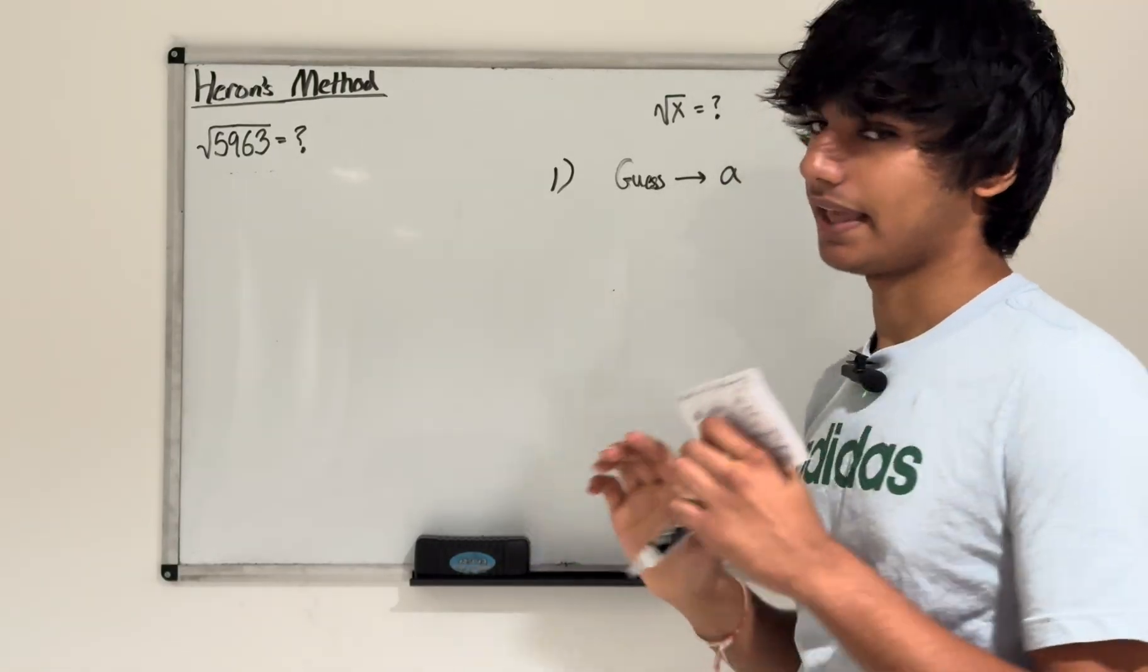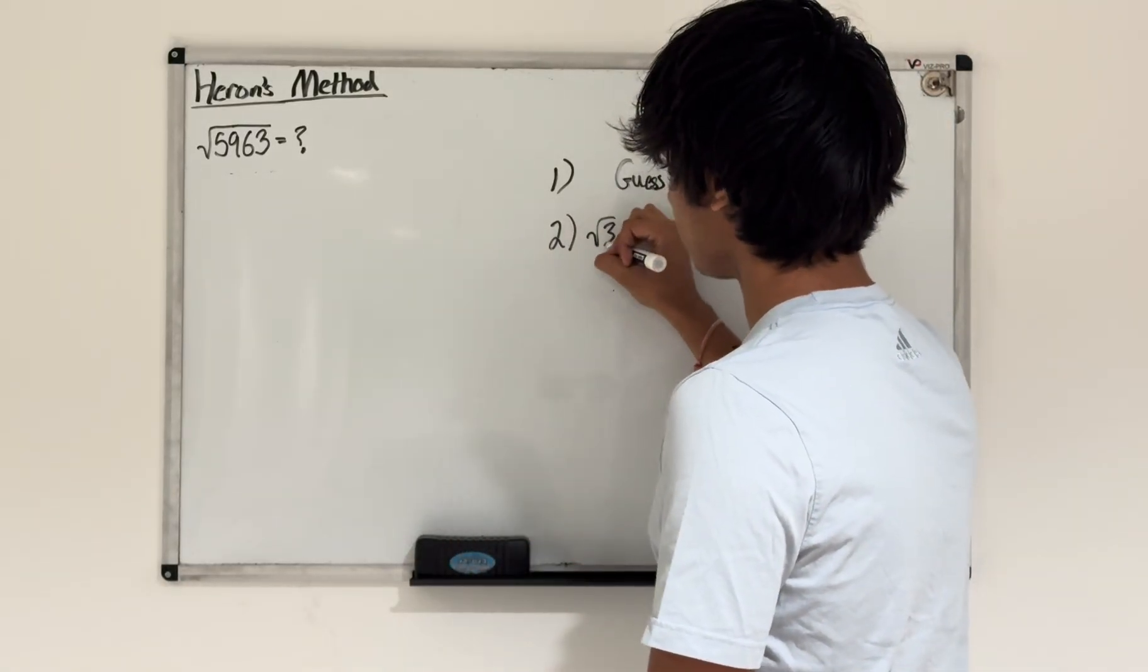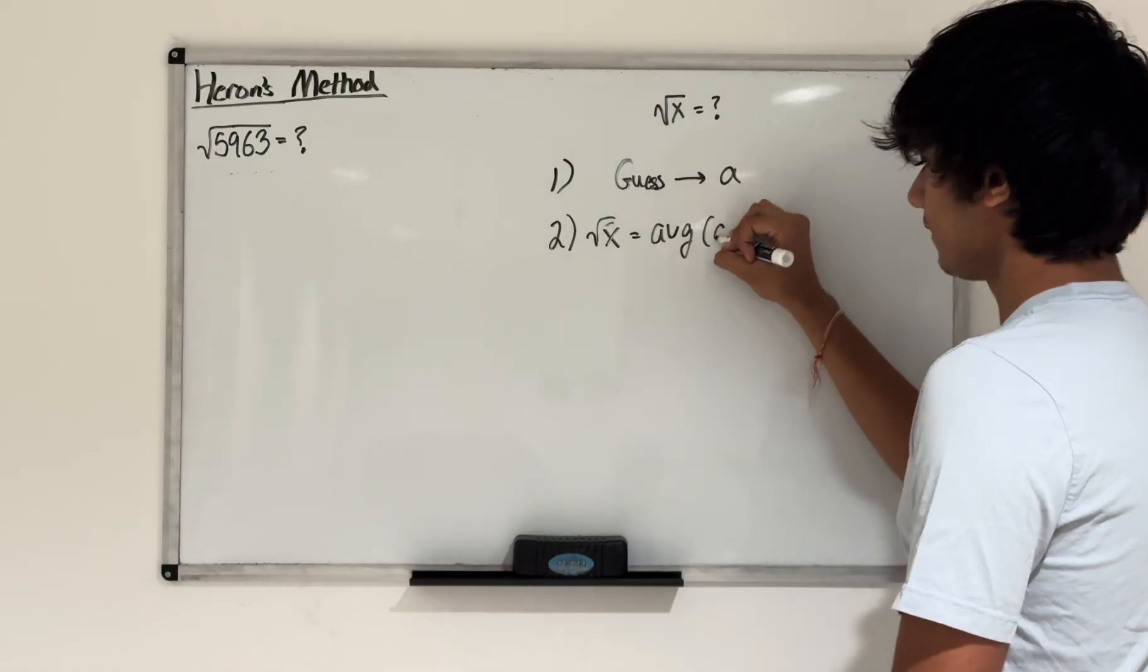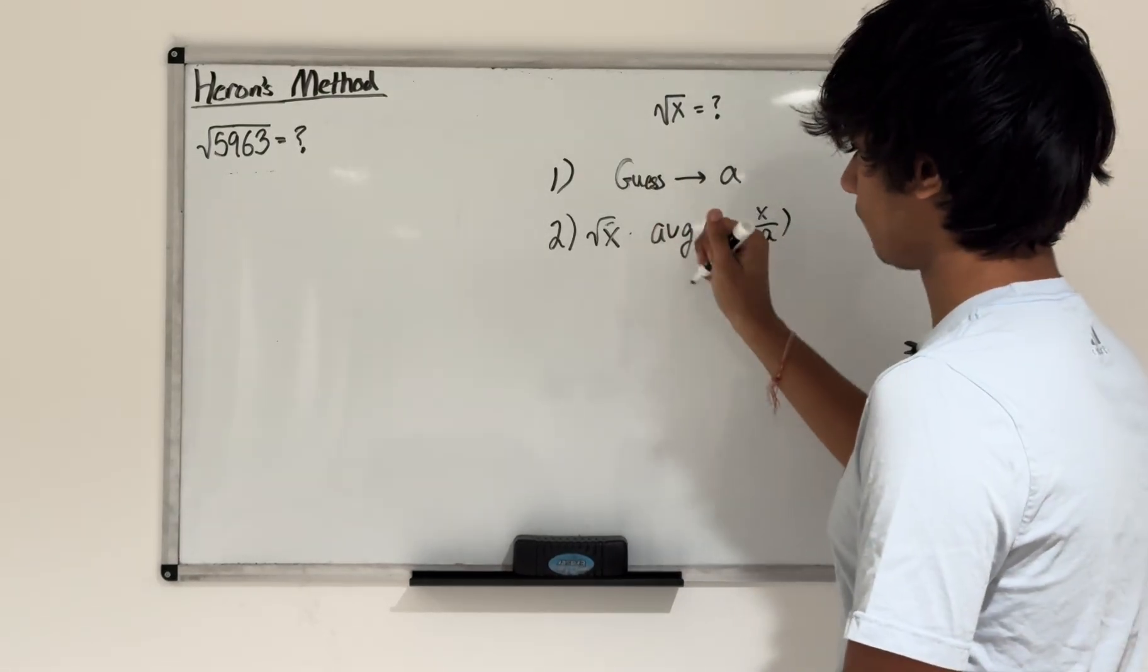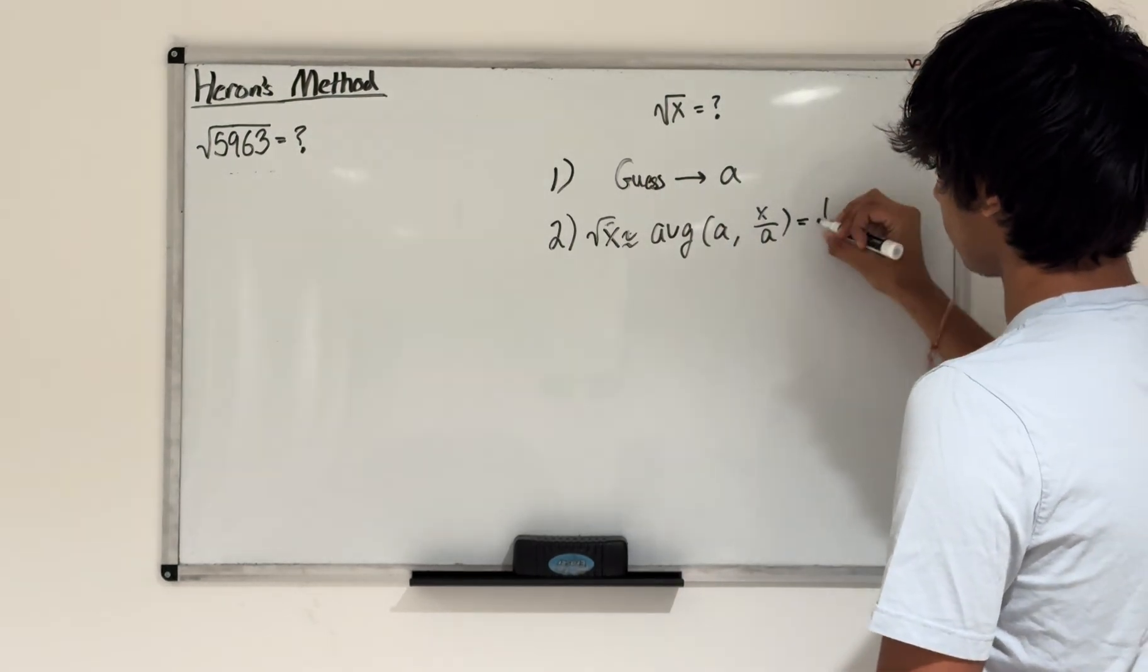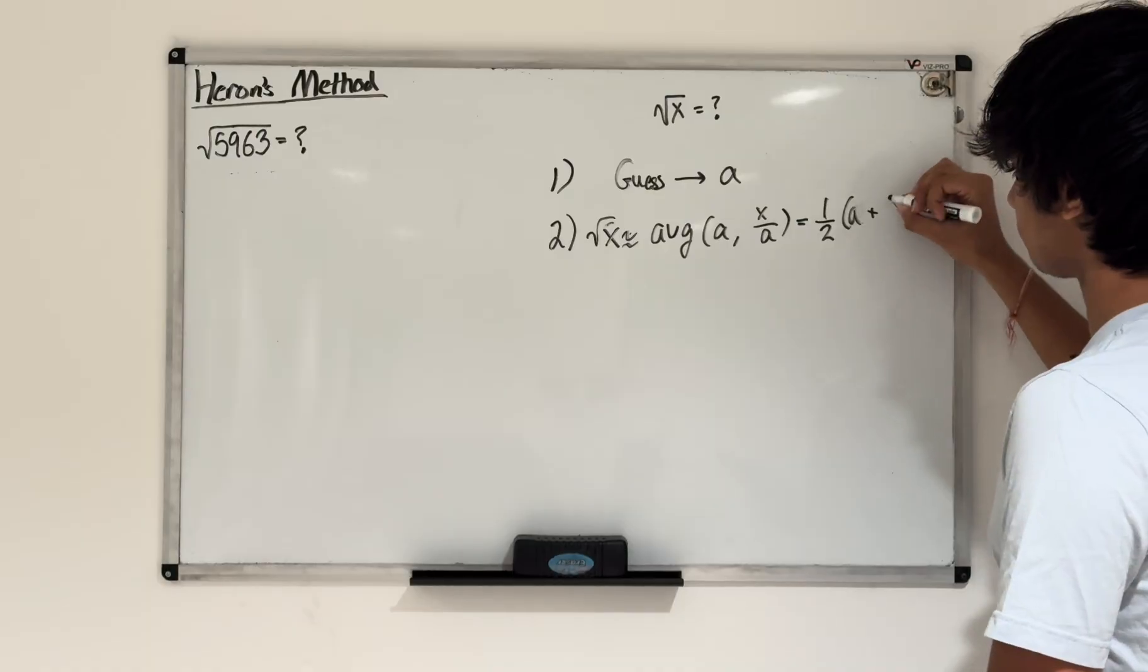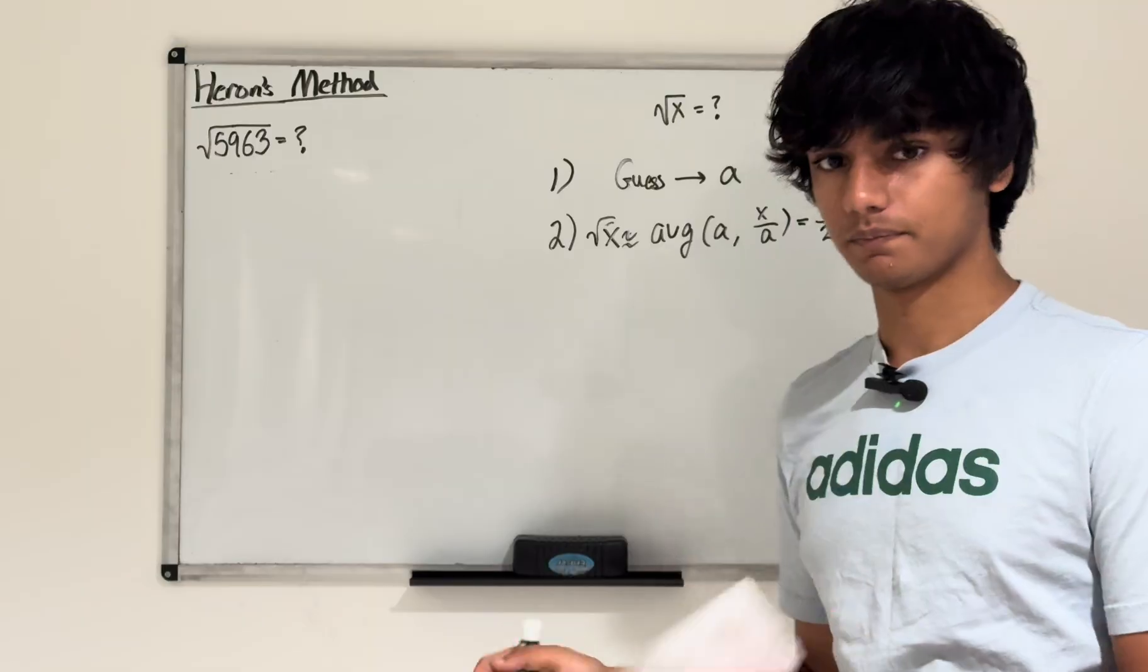Then the second step, and this is the only next step, is all you have to do from here is take the average to find the value of square root of x. So all you have to do is take the average of your guess a and x divided by a, and that's going to be your estimate for square root of x. In other words, all you have to do is take one half and multiply it by a plus x divided by a.